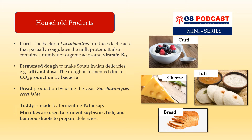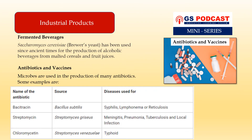Microbes are also used to ferment soya beans, fish, and bamboo shoots to prepare various delicacies. Microbes are used extensively in household products. In industrial applications, Saccharomyces cerevisiae, also known as brewer's yeast, has been used since ancient times for the production of alcoholic beverages from malt and fruit juices.